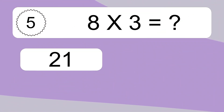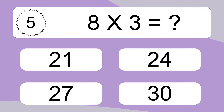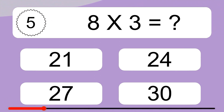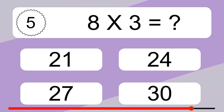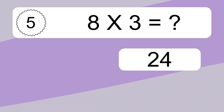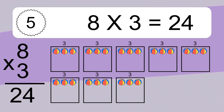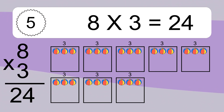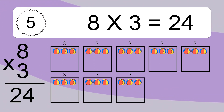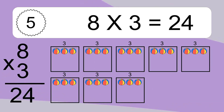8 times 3 equals what? 8 times 3 equals 24. We have 8 boxes, and each box has 3 colorful balls inside. If you count all the balls in all the boxes together, you will have 8 times 3 balls. This equals 24 balls.